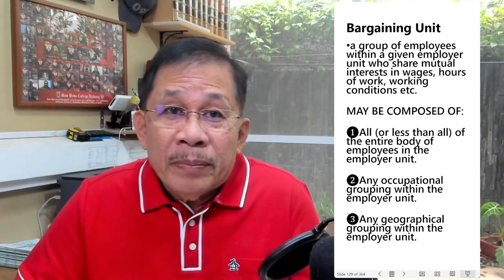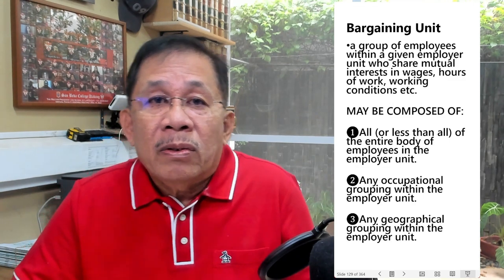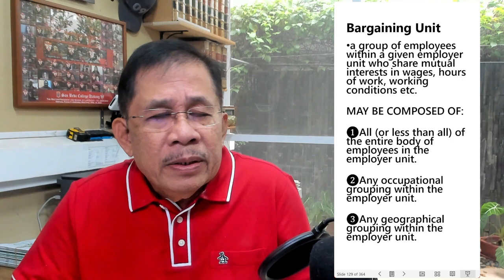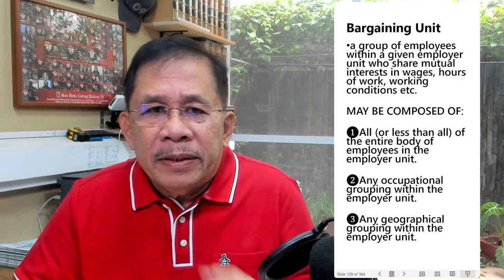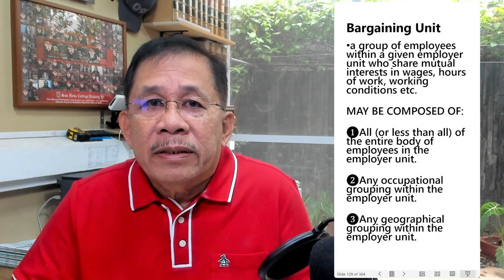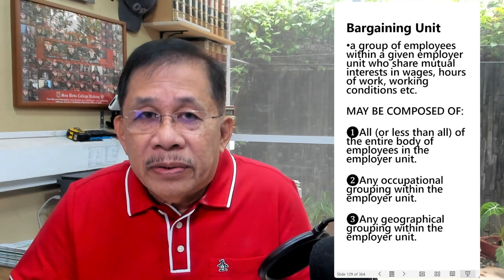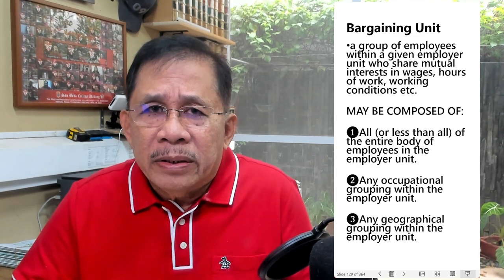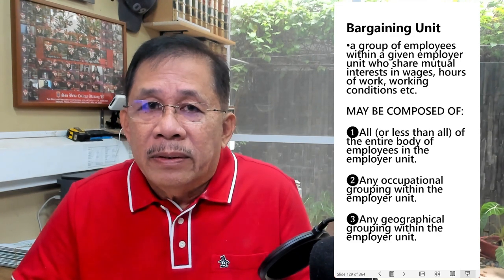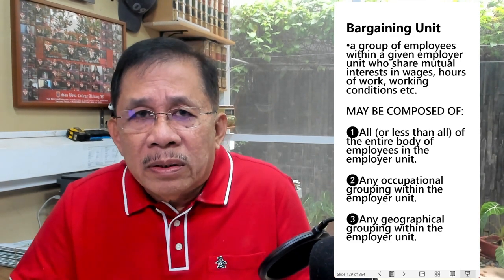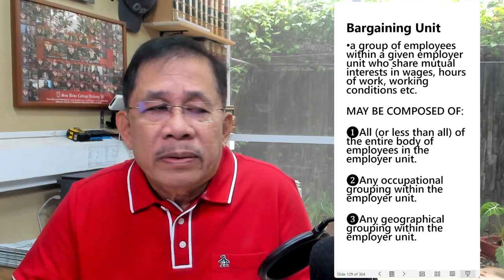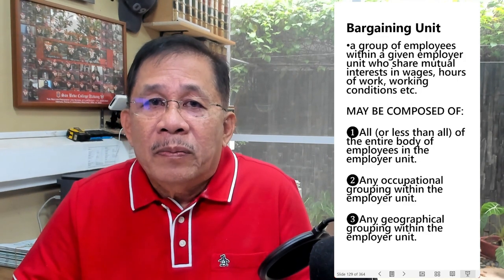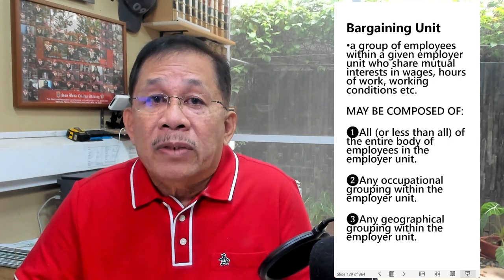A bargaining unit may also be composed of any occupational grouping within an employer unit. For example, in an airline company, pilots, flight attendants, and ground personnel will constitute separate bargaining units because they do not share mutual interest in wages, hours of work, and other working conditions. In a school, teaching personnel constitutes a bargaining unit separate from non-teaching personnel.